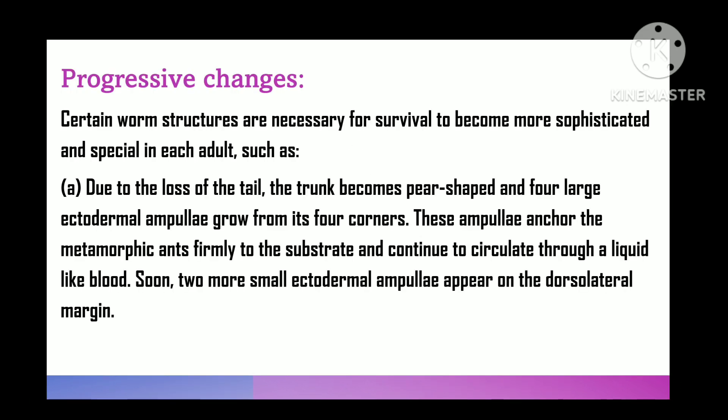Progressive changes: some larval structures necessary for survival become more elaborated and specialized in the adult. Due to loss of the tail, the trunk becomes pear-shaped and larger ectodermal ampullae grow out of its four corners. These ampullae firmly anchor the metamorphosing tadpole to the substratum and also serve for respiration, as a blood-like fluid keeps circulating through them. Soon, two more smaller ectodermal ampullae appear dorsolaterally.